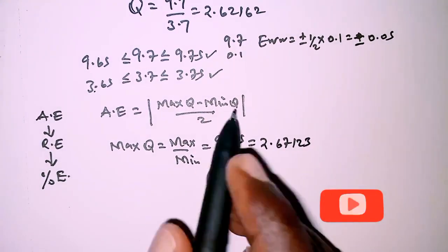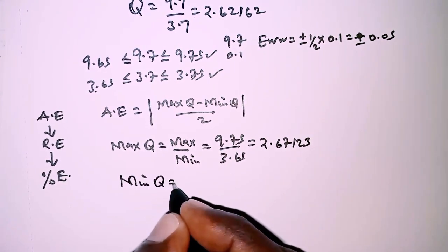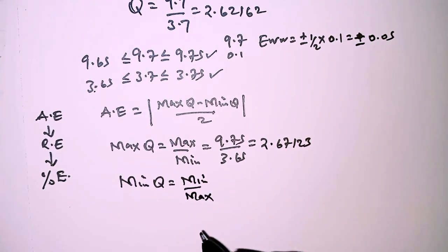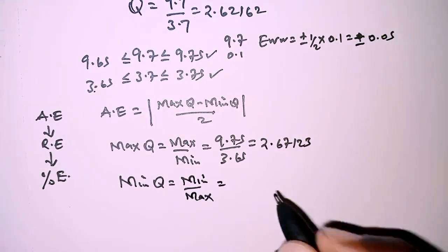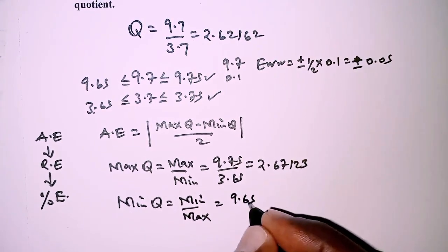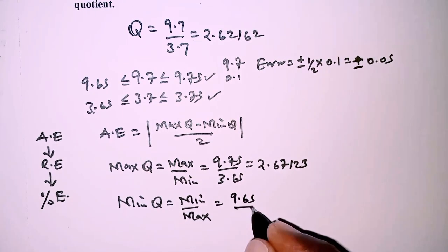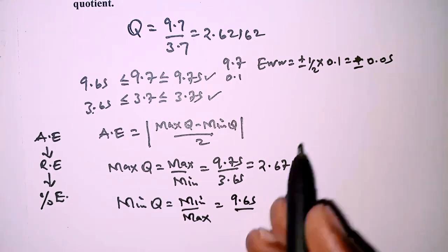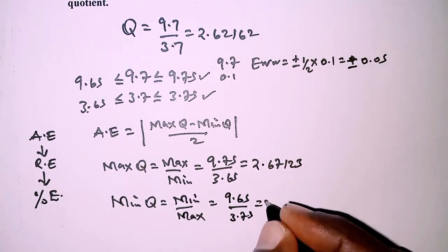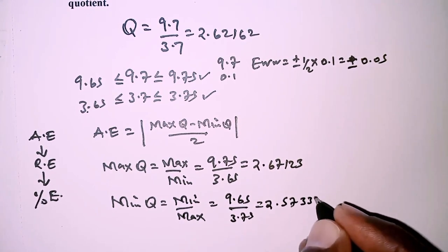We also need the minimum quotient, which is obtained as the minimum of the numerator over the maximum of the denominator. The minimum of the numerator is 9.65, that is the lower limit, over the maximum of the denominator 3.75. This works out to give 2.57333.